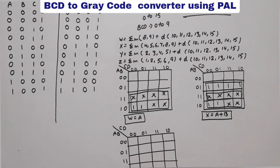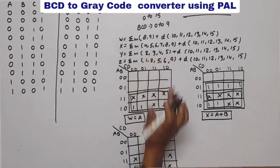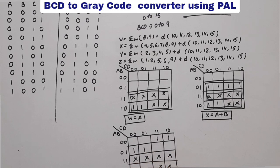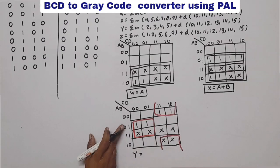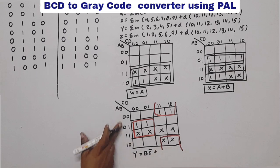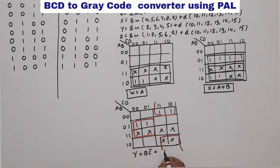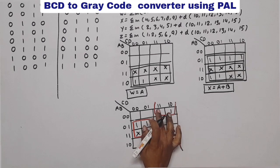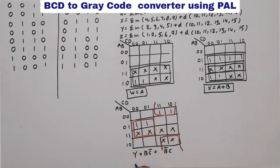Now K-map for Y. Don't cares are the same. Minterms are 2, 3, 4, 5. In this case two quads are formed — first quad and second quad back to back. From the first quad, the common rows give B, and common columns give C-bar. From the second quad, common rows give B-bar and common columns give C. So Y equals BC-bar plus B-bar C.